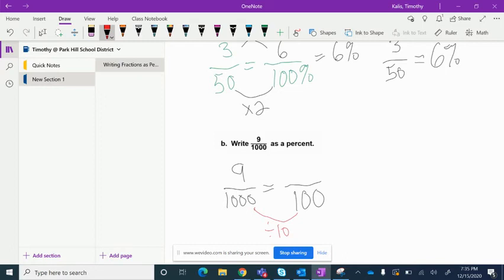So whatever we do to the denominator, we have to do to the numerator. So 9 divided by 10 equals 0.9 or 9 tenths.